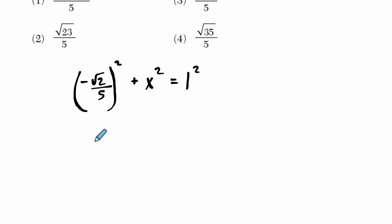Negative radical 2 over 5. Well, if we square a negative, we get a positive. If we square radical 2, that's just radical 2 squared, that's 2. Over 5 squared is 25. Plus x squared equals, of course, 1.